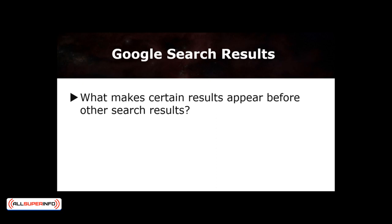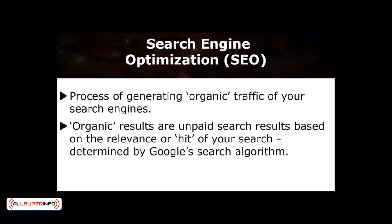These people are called SEO agents. SEO involves the process of generating organic traffic from your search engines. Organic or natural results are unpaid search results based on the relevance or hit of your search. These results are determined by Google's search algorithm to detect the site most optimized to their criteria and your search. Sometimes, you can even see snippets, as Google calls it, from an optimized site.